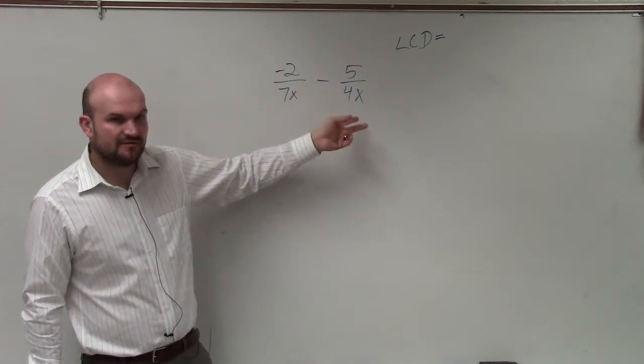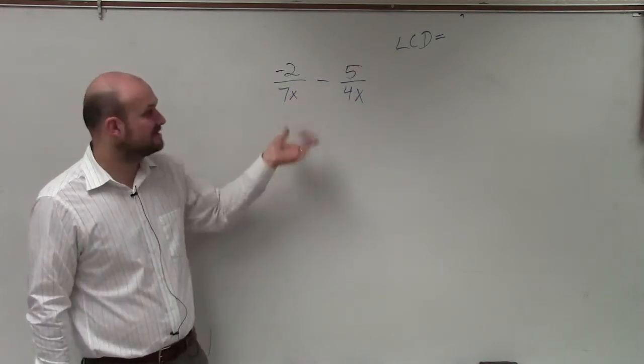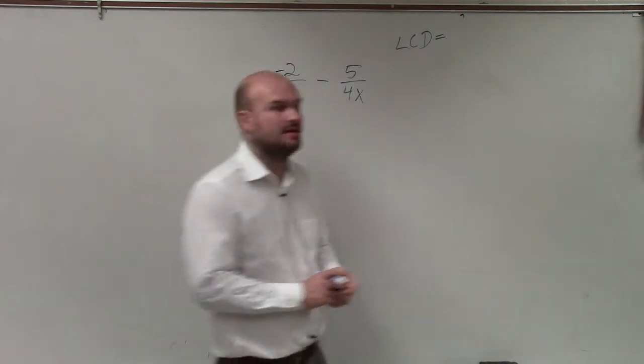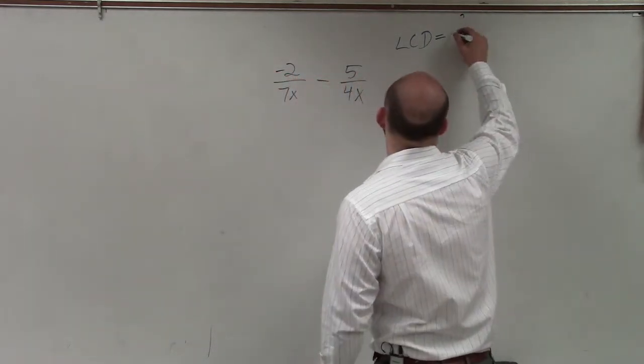So the LCD of 7 and 4, the smallest number that they both divide into, is actually the product of 7 and 4, right? Which would be 28.